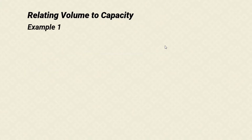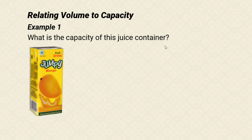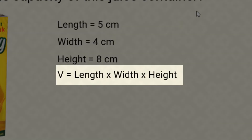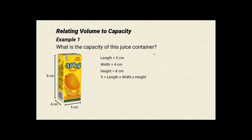Let's look at one example of relating volume to capacity. How many litres of juice does this container hold? The length of the juice container is 5 cm, the width is 4 cm, and the height is 8 cm. Using the volume formula, we have length times width times height. Putting in the values we have 5 times 4 times 8, which gives us 160 cubic centimeters.